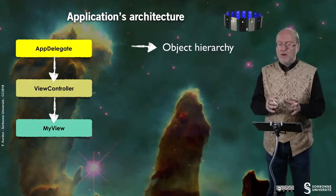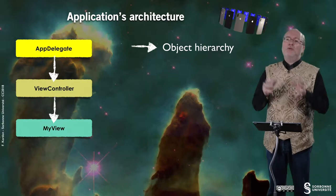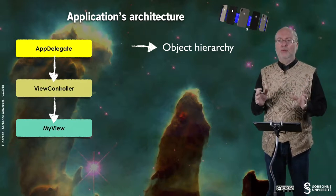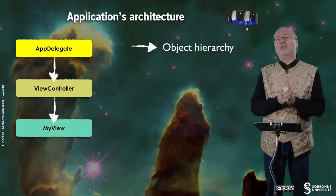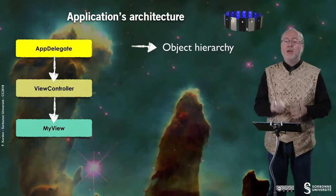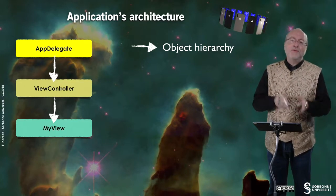Let's have a look at the application's architecture. Until now, you are used to this architecture: you have an AppDelegate, a ViewController, and a View attached to the ViewController. You fill the ViewController and create a class that inherits from UIView, usually called MyView or something like that. The name has no importance as long as it derives from UIView.